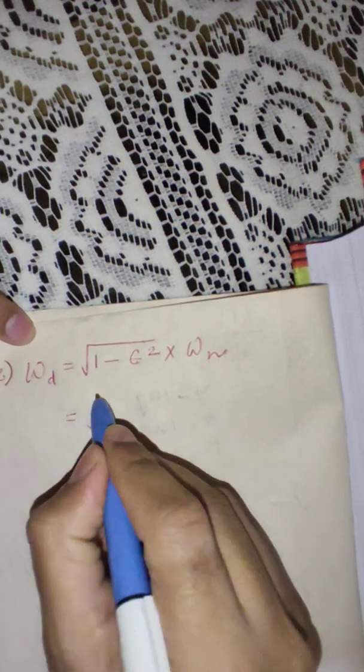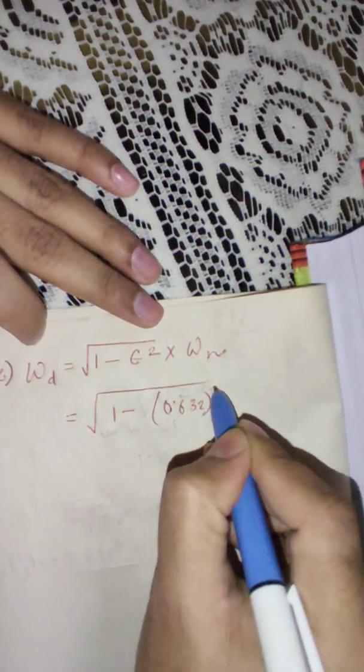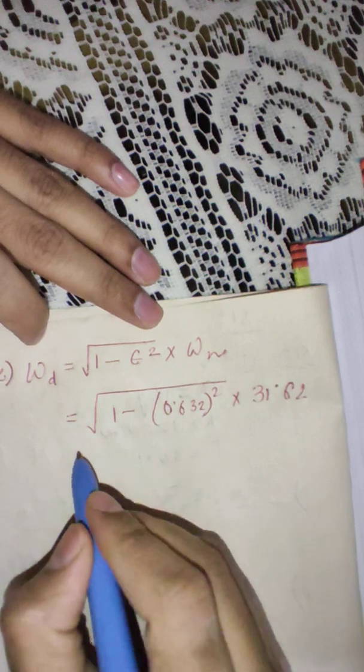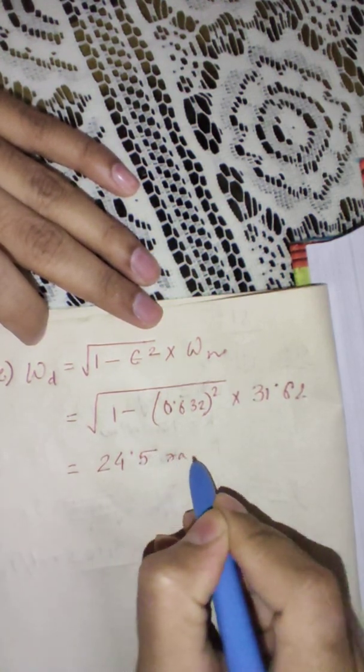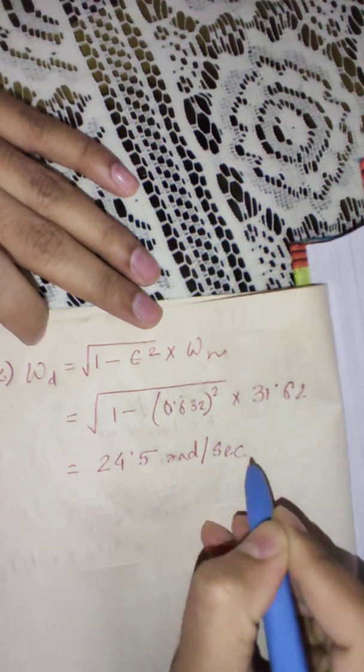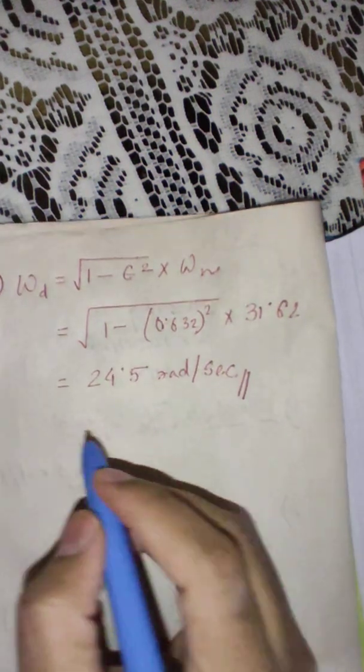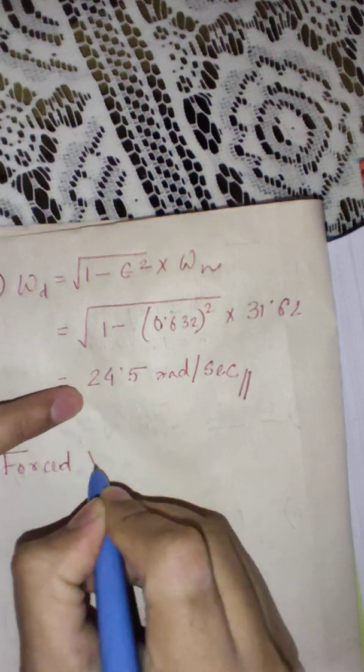So this is square root of 1 minus 0.632 square into 31.62. So this will give rise to 24.5 radian per second. So these things are totally equation dependent. Always remember one thing, in case of forced vibration problems,